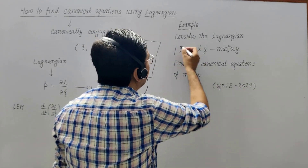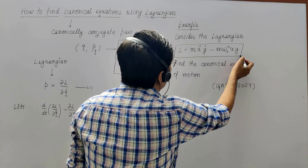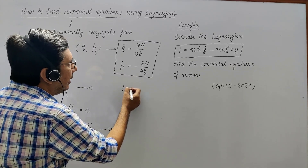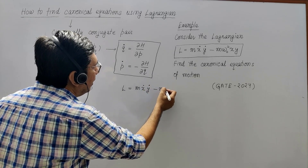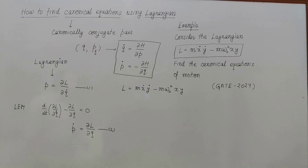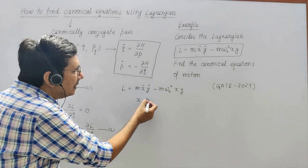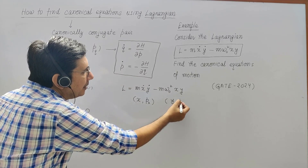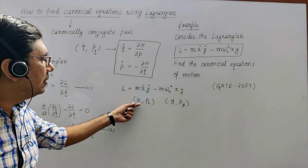Now, for example, take this Lagrangian — this question was asked in GATE 2024. The Lagrangian given is L = mẋẏ - mω₀²xy. We have to find the canonical equations of motion. There are two canonically conjugate pairs here: (x, px) and (y, py).